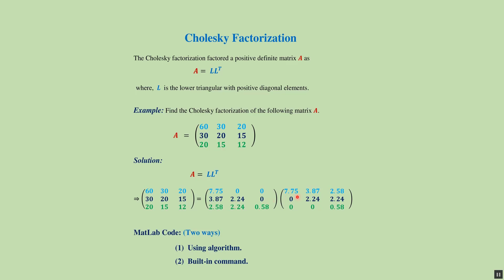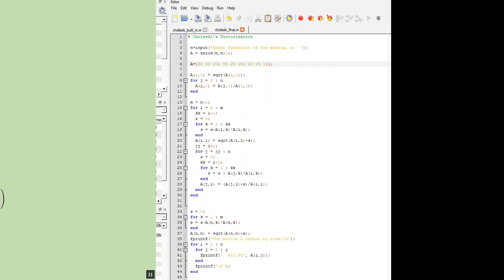And this one is the transpose of the lower triangular matrix. Here we will discuss two different ways to find the Cholesky factorization: the first way is using the algorithm, and the second way is using the built-in command.